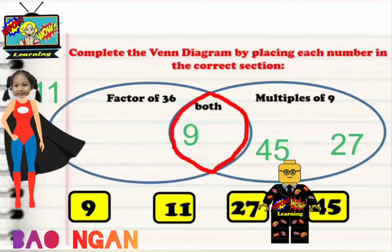So remember, if the number is not in, it goes around the outside. We've got factors of 36. We didn't have any just factors of 36, we had both there. Factors of 9 and factors of 36, both, was 9. And the multiples of 9 were 45 and 27.